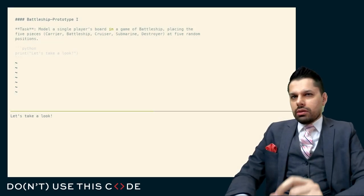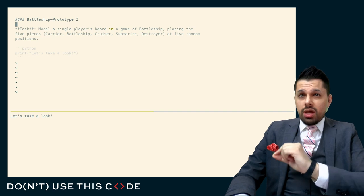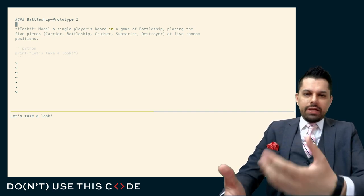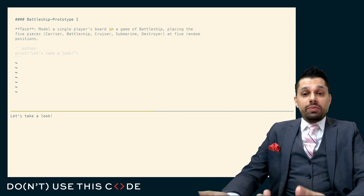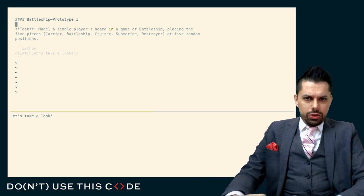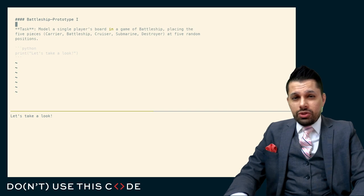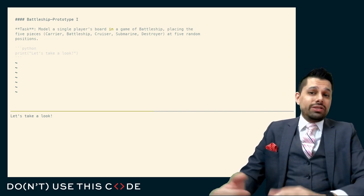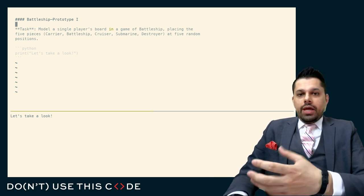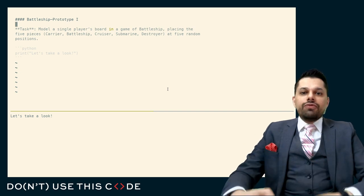In this prototype, we want to model a game of Battleship involving a single player's board and just the placement of the pieces on that board. In the game of Battleship, you have different pieces that fit onto a 9x9 or 10x10 board. You choose where to put them, maybe with some strategy or just randomly until you find something you like. In order to play this game, we'll have to model some representation of these entities.